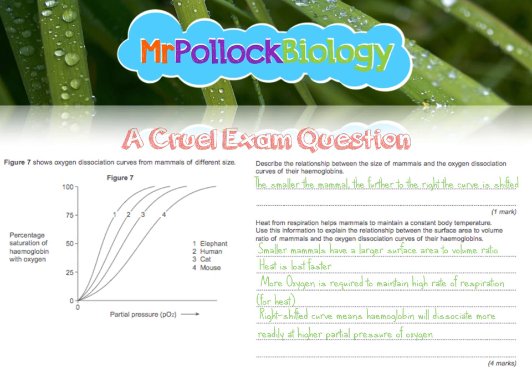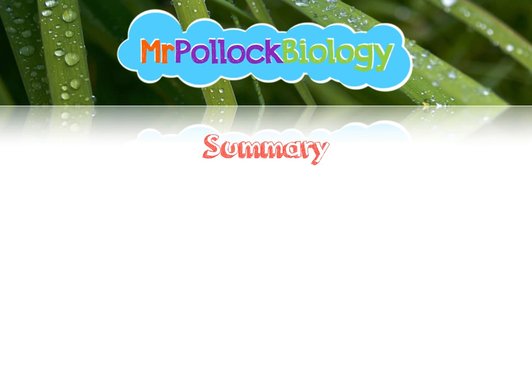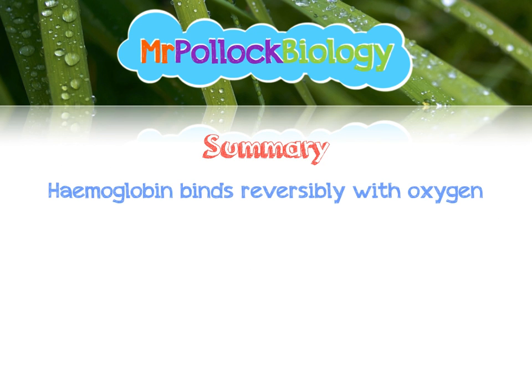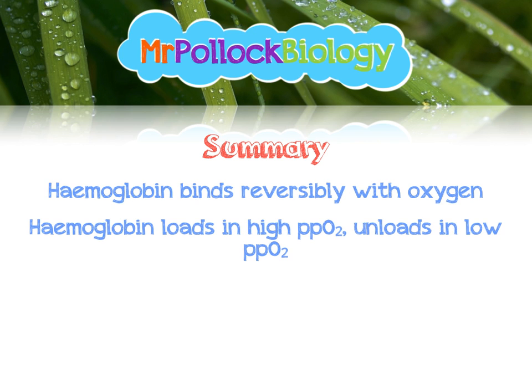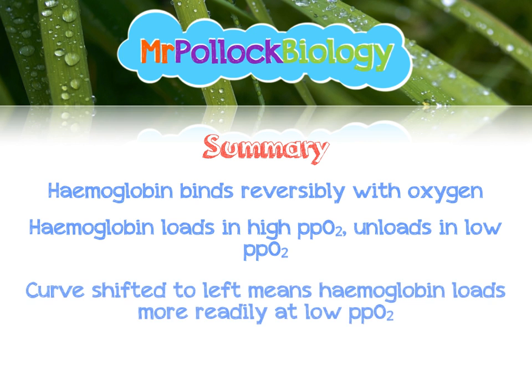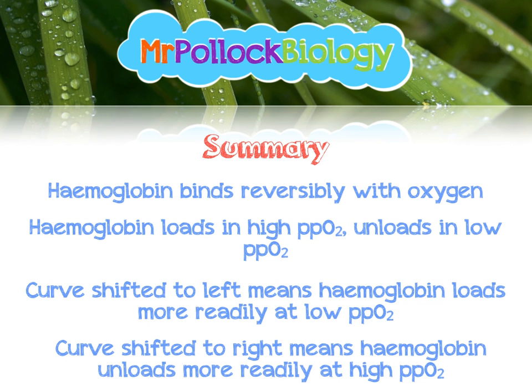To summarise: haemoglobin binds reversibly with oxygen, loading in high oxygen conditions and unloading in low oxygen conditions. A curve shifted to the left means haemoglobin loads more readily at a low partial pressure of O2. A curve shifted to the right means haemoglobin unloads more readily at a high partial pressure of O2. I hope that's been useful — thank you very much for watching, please like, comment and subscribe.